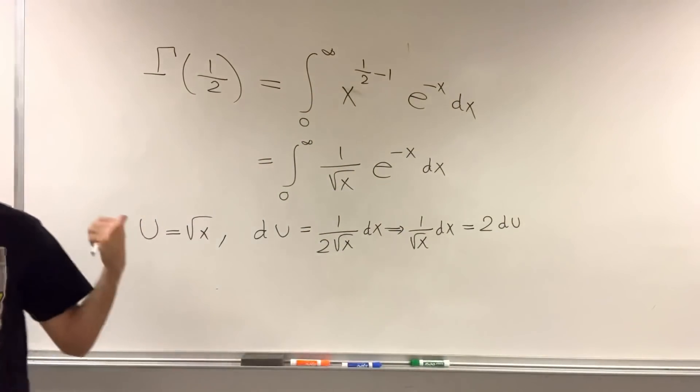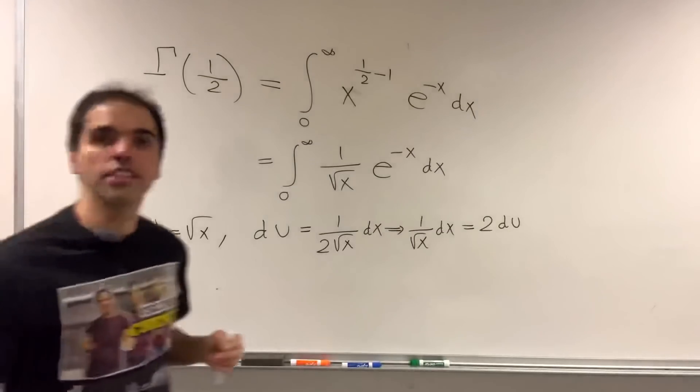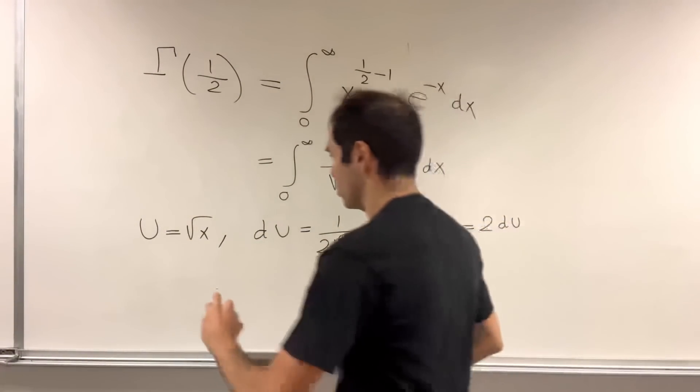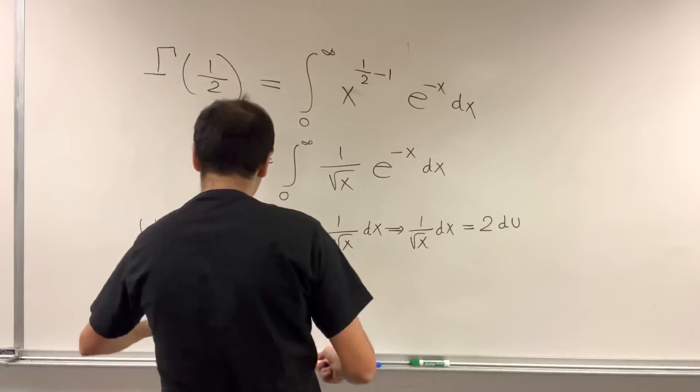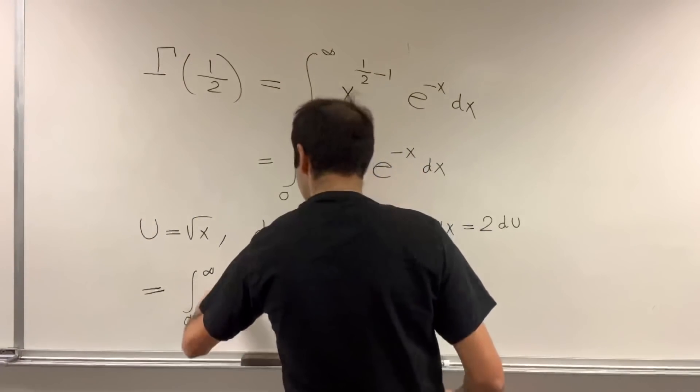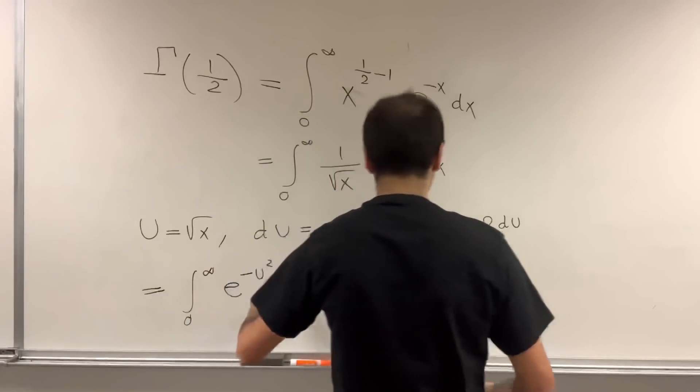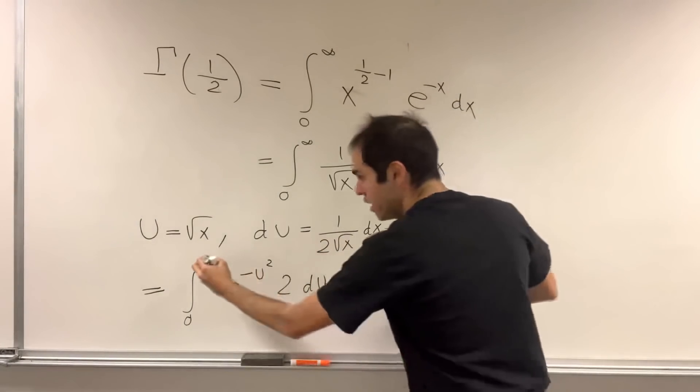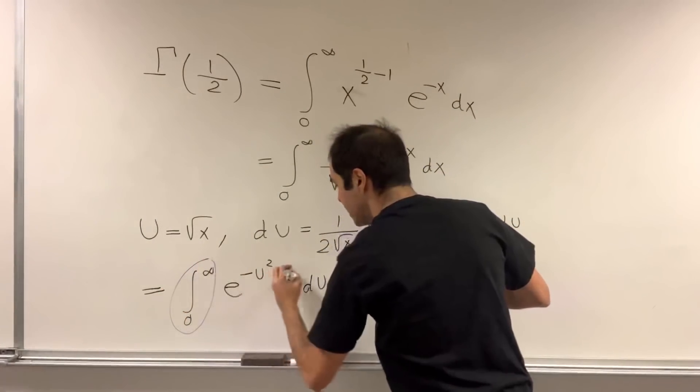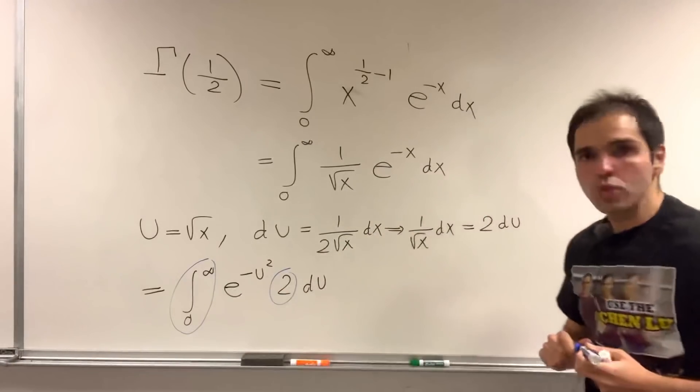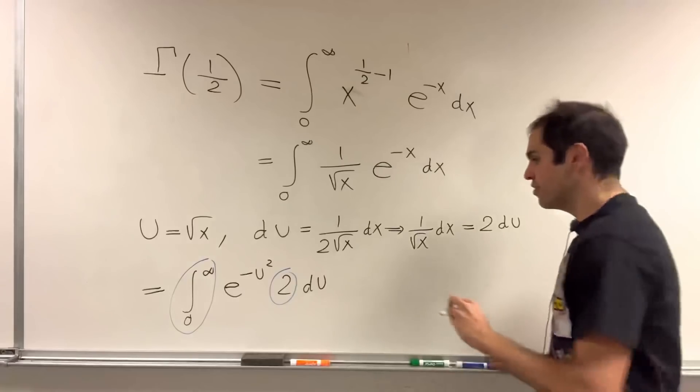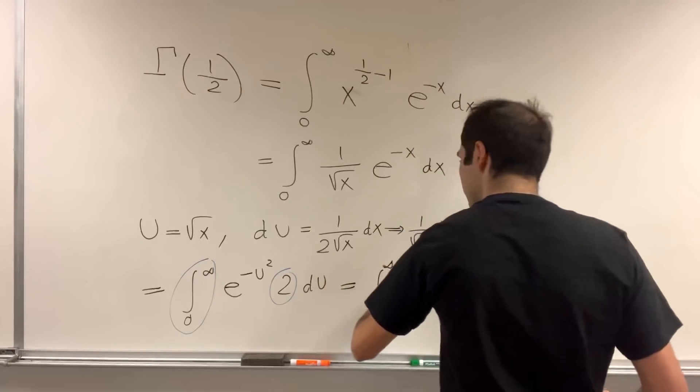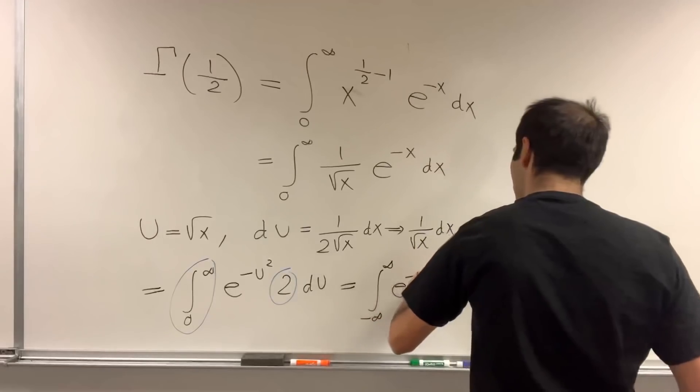And, well, u at 0 is 0, u at infinity is infinity. So, really, what this transforms to is the integral from 0 to infinity of e of minus u squared 2 du. But, e of minus u squared is an even function. So, 2 times the integral from 0 to infinity is just the integral from minus infinity to infinity of e of minus u squared du.